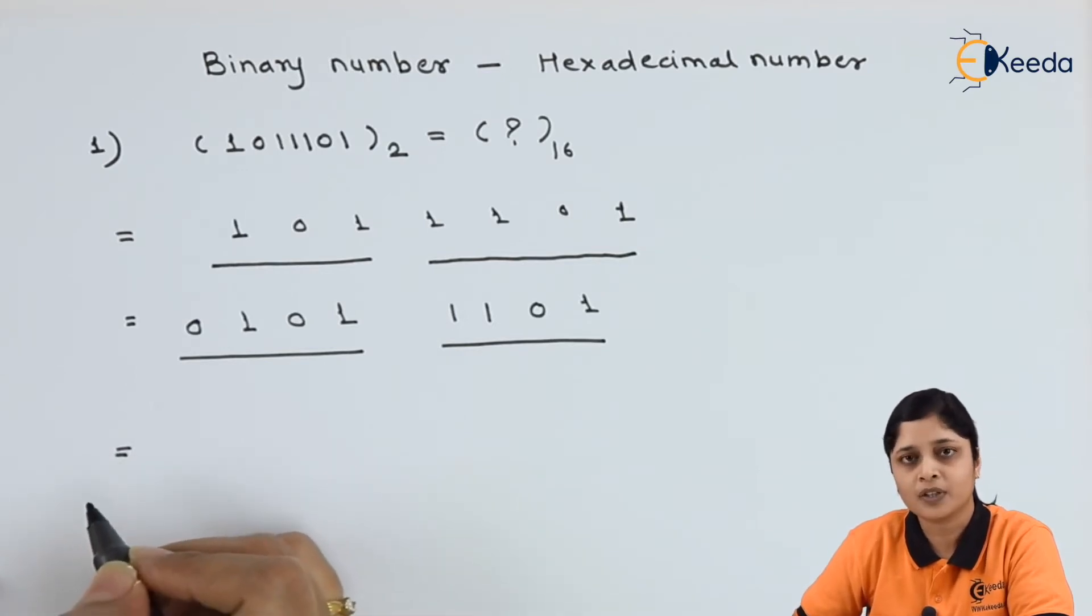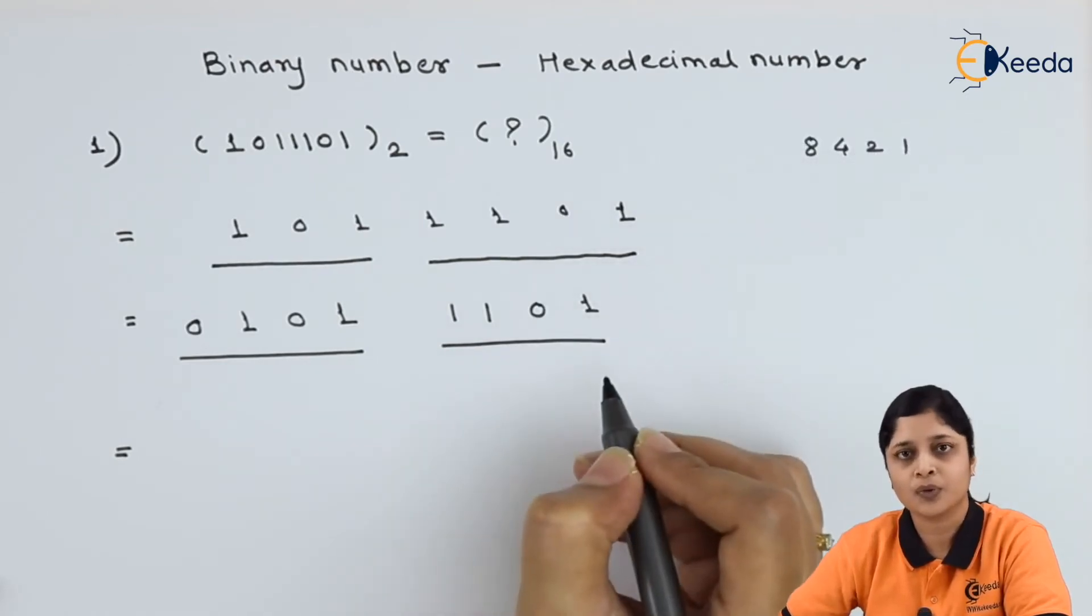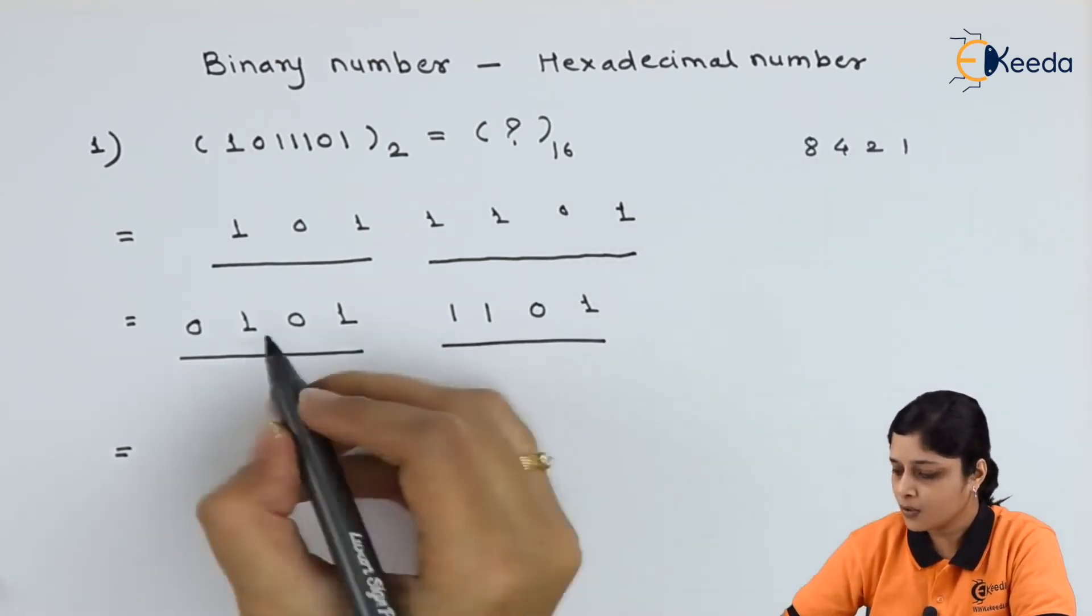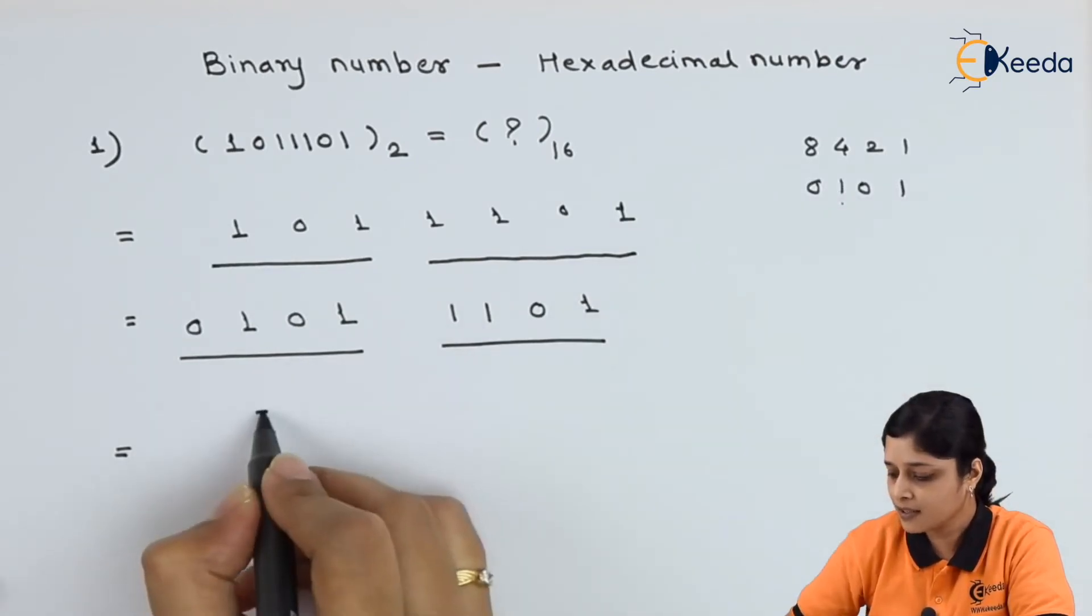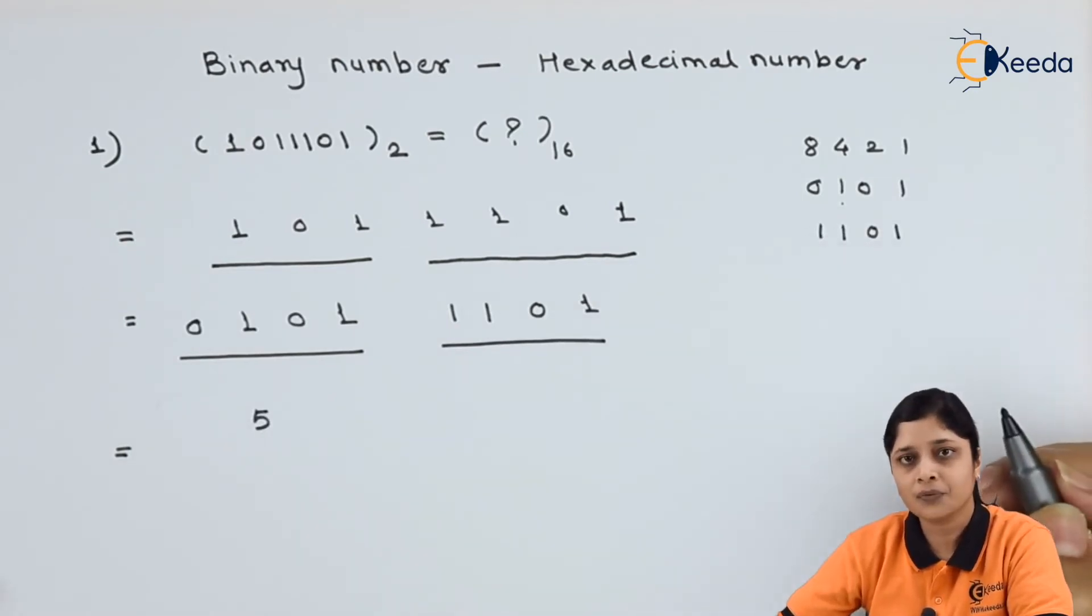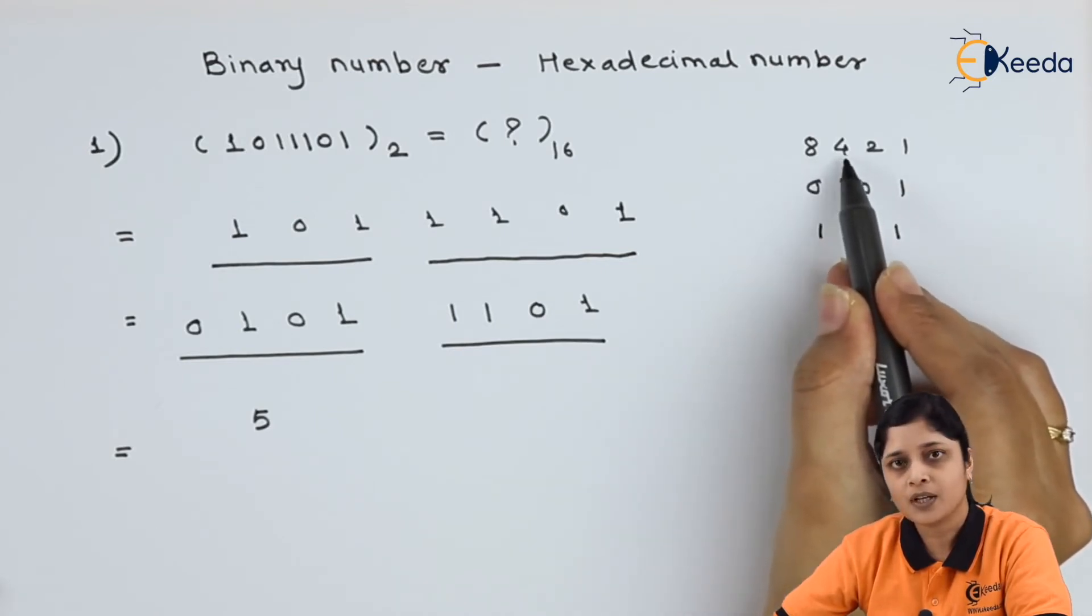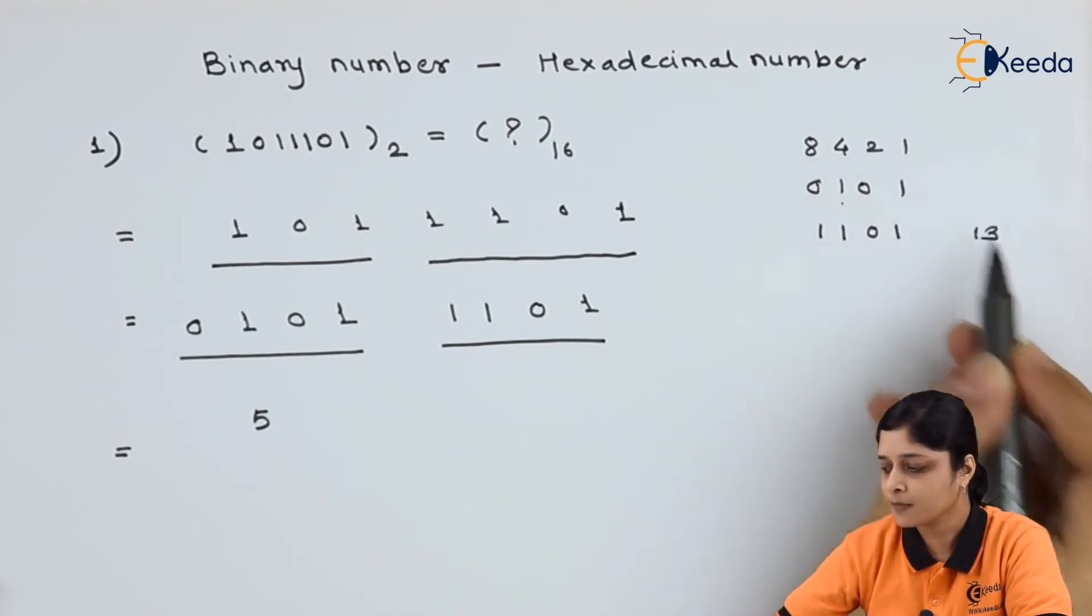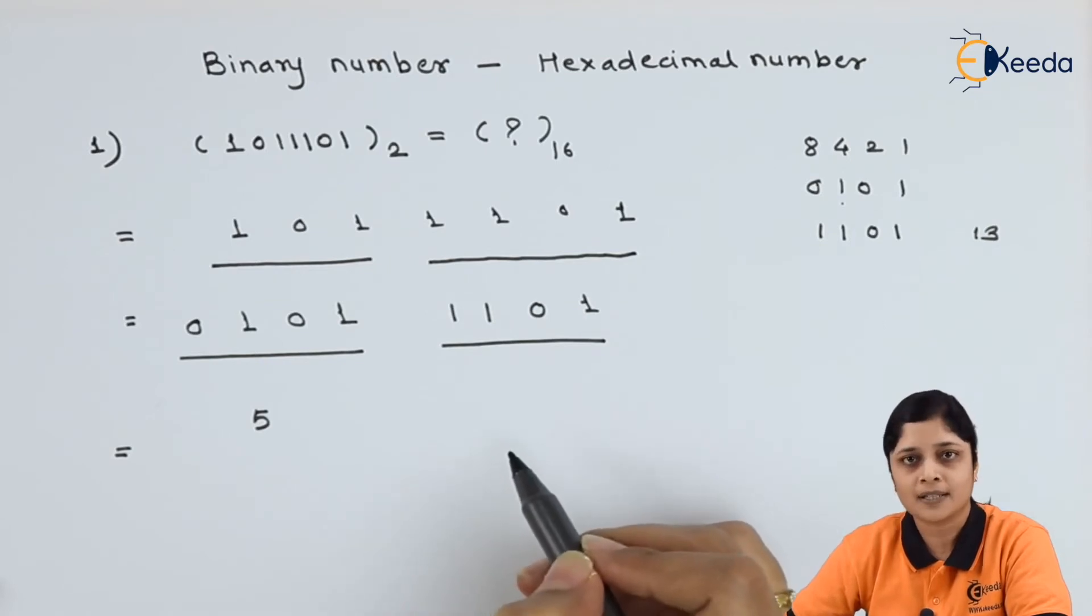After grouping you have to convert directly into the decimal. You already know we have again 8, 4, 2, 1. So 0, 1, 0, 1 will give you 4 plus 1 is 5. 1, 1, 0, 1 will give you 8 plus 4 plus 1. 8 plus 4 is 12. 12 plus 1 is 13. Now remember this is hexadecimal number system. We can't write 13 as it is for decimal.